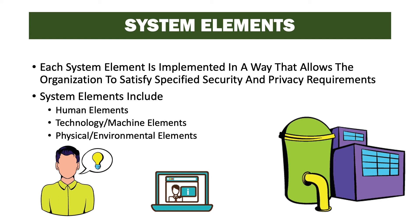These are the elements that make up the system. That could be the people with their roles and responsibilities defined. It could be the technology including servers, network gear, technologies, and programs. And also the physical environmental elements like the gates, guns, guards, locks, air conditioning, cooling, and humidity controls. Those things all make up the system, and we put controls in place within the bounds of the system to provide protection.